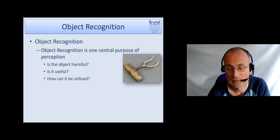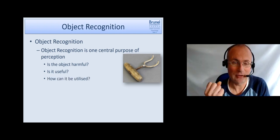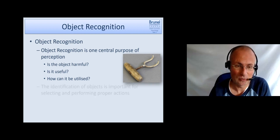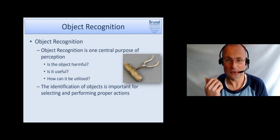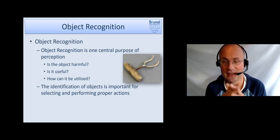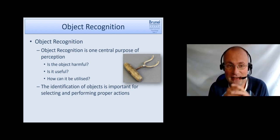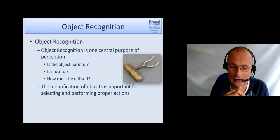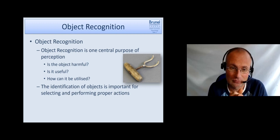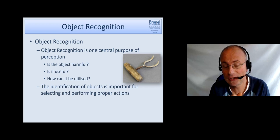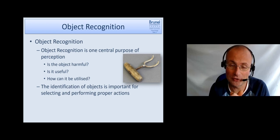How can we utilize it? We know how our effectors, our hands, work so can we use it somehow. We need to be able to identify objects because then we can select and perform the proper actions with them. If we think in the wrong way of objects then it might be dangerous. Think about little children who have to learn how to use scissors for instance.